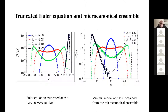We see that at least qualitatively we do observe the same transitions using the truncated Euler equation — a system which is at statistical equilibrium describable using the microcanonical ensemble. We can therefore predict the transitions between different turbulent flows just using this truncated Euler equation. To check robustness, we strongly decreased the number of modes, and down to 13 modes we still observe the same bifurcations and transitions when we change the ratio of energy to enstrophy.